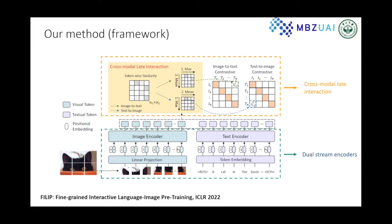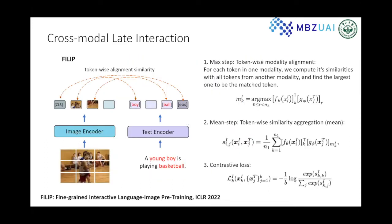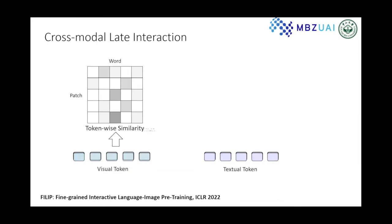Previous works like CLIP encode each image and text separately to get global features and then compute similarities between the two global features. However, this model lacks fine-grained interactions between word and patch alignment. To learn a token-wise alignment, we propose a token-wise mean-max similarity: for each token in one modality, we compute its similarities with all tokens from the other modality, select the largest one, and then use a mean operation to aggregate the token-wise similarity into a global one for each image-text pair.